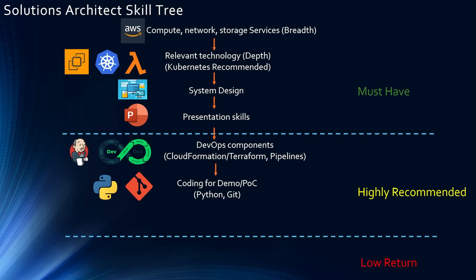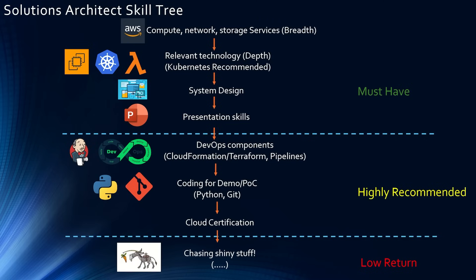One thing people get hung up on is how deep to learn a programming language. You don't need to learn data structures, algorithms, and complex concepts. All you need is to know how to use cloud services in your code — for example, getting fields from an incoming payload and inserting into DynamoDB, or selecting fields from DynamoDB and returning them to the API. You will never face a coding round in a solutions architect interview. The next highly recommended thing is cloud certification — having something like the AWS Solutions Architect Professional really helps you stand out and get that call from the recruiter.